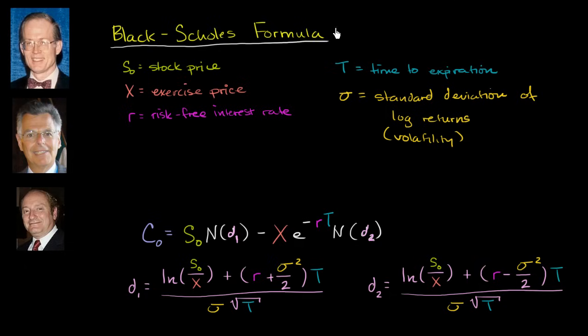Myron Scholes and Bob Merton did get the Nobel Prize for their work. The reason why this is such a big deal — why it is Nobel Prize worthy — is that people had been trading stock options for a very, very long time. They had been buying and selling them; it was a major part of financial markets already. But there was no really good way of putting our mathematical minds around how to value an option. People had a sense of the things they cared about, but we really didn't have an analytical framework for it. That's what the Black-Scholes formula gave us.